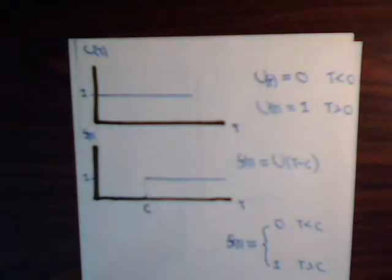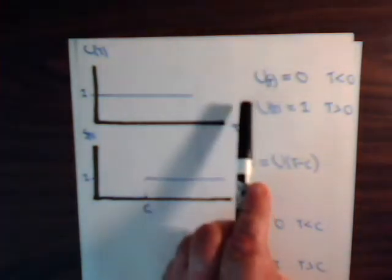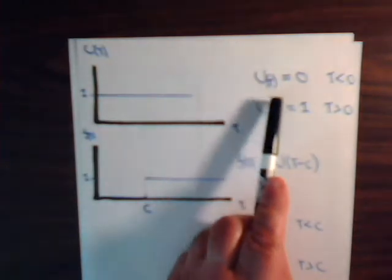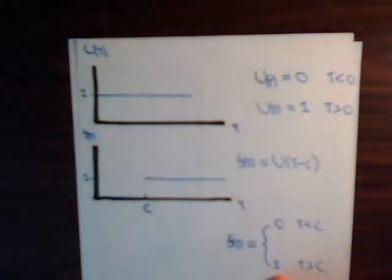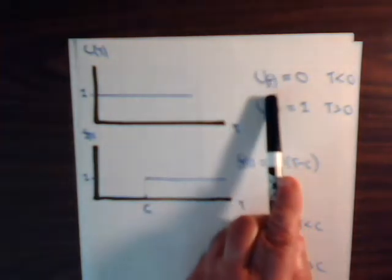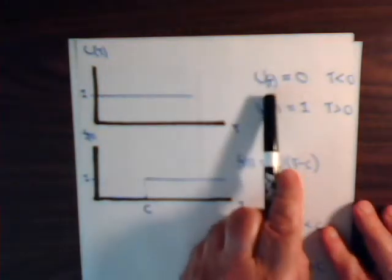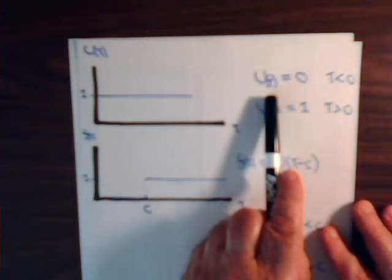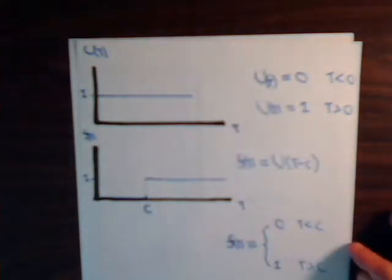And of course the idea of a unit function is pretty simple. We're taking u for unit function of some variable and whatever we have inside of these parentheses, if it's less than zero, then u of t equals zero. And if whatever inside of here is greater than zero, then u of t equals one.